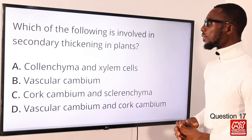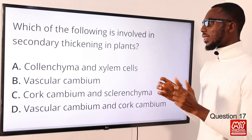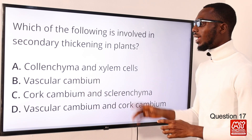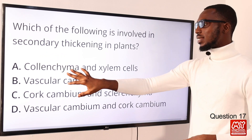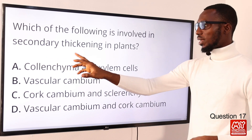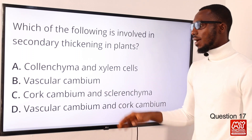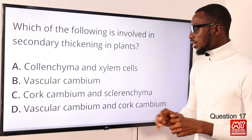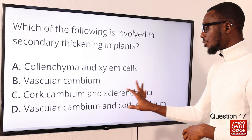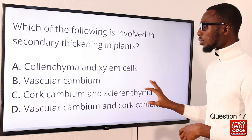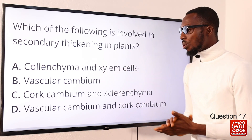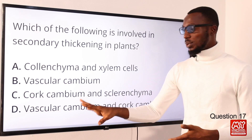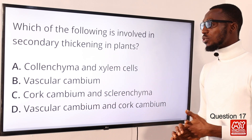Question 17: which of the following is involved in secondary thickening in plants? Option A, the presence of collenchyma, negates this — collenchyma is found in young plants, so that is out. Vascular cambium is correct, but not alone. Looking at cork cambium and sclerenchyma — the function of sclerenchyma is far from what we are talking about here. What we are looking at is option D: the vascular cambium and the cork cambium. The correct option is option D.